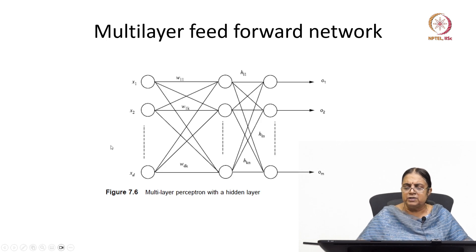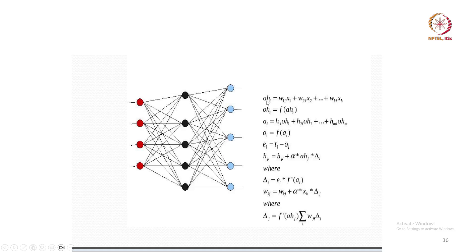Let us see how this weight update is carried out. We have the output we are getting, and the actual value minus the output gives you the error. You use that error to update the output-layer weights: hji = hji + α × a_hj × δj, where δj = f'(ai). The activation function used is usually the sigmoid. You find the differential of that — f'(ai) — into ei, which is the error, and that is used to update these weights.